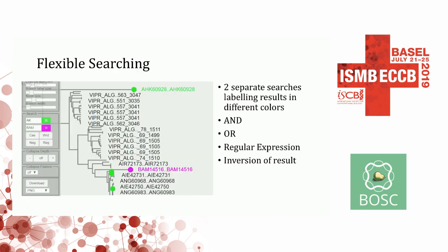I think this feature is relatively a highlight, and for my personal use it's very useful — it's the searching. You have two search fields and can search two things in parallel, which will be colored in different colors, as you can see in this example — green and red. This search also allows you to do AND searches or regular expression searches. You can invert the result, so it's quite flexible.